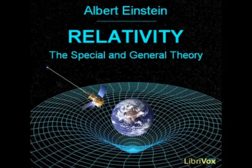We now ask ourselves whether both clocks go at the same rate from the standpoint of the non-rotating Galilean reference body K. As judged from this body, the clock at the center of the disk has no velocity, whereas the clock at the edge of the disk is in motion relative to K in consequence of the rotation. According to a result obtained in section 12, it follows that the latter clock goes at a rate permanently slower than that of the clock at the center of the circular disk, i.e. as observed from K.